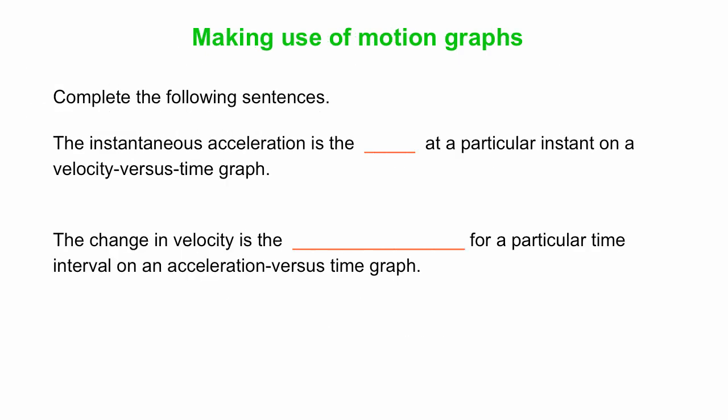Let's make use of motion graphs. We already looked at position and velocity and how they're related. Velocity is related to position the same way acceleration is related to velocity. The instantaneous acceleration is the slope at a particular instant on a velocity versus time graph, while the change in velocity is the area under the curve for a particular time interval on an acceleration versus time graph.